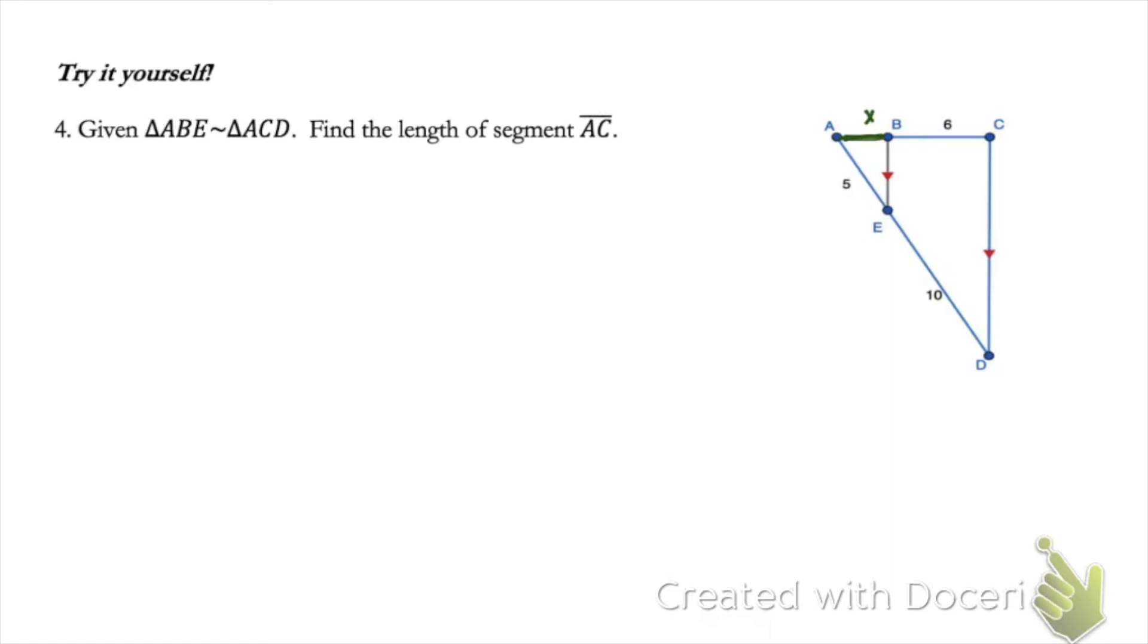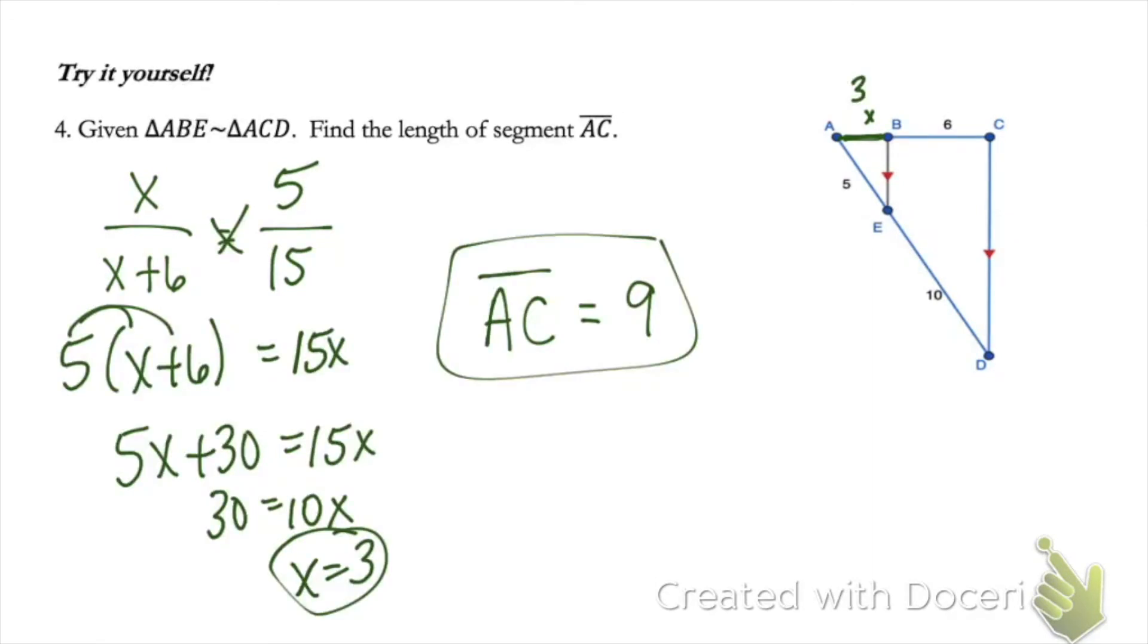So here we go, setting up our proportion. We're going to have X on top. And then on bottom, we're going to find the proportional side to AB. So AB is the side of the small triangle, our proportional side is going to be AC. So again, we'll have X plus 6. The other side, we're going to use 5 on top because it's from the same triangle as the X. And then 15 on the bottom because that's the whole length of AD. And our final answer that we get is the length of AC is 9.